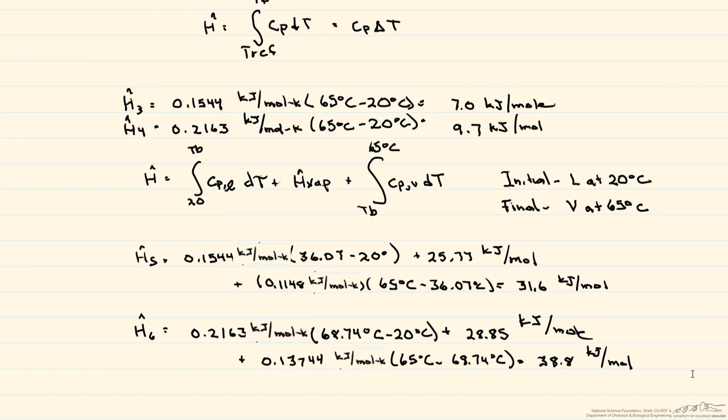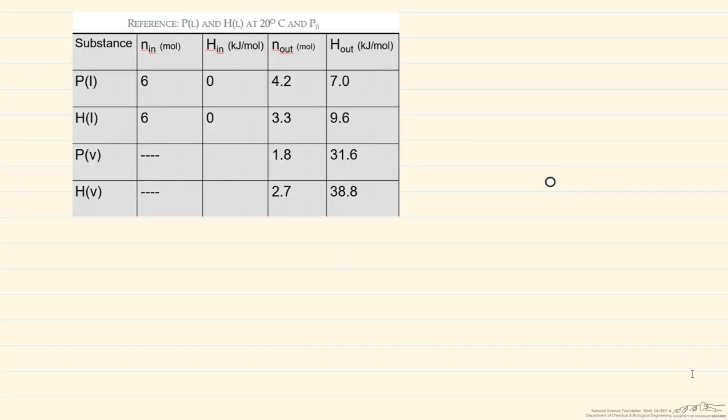So now let's look at our table. So we use the values in this table to find our final Q. Note because of our reference state, our enthalpies coming in are zero. So our Q is going to be equal to the summation of our enthalpies coming out, which is going to be the summation of our number of moles of whatever species times the specific enthalpy of the species.